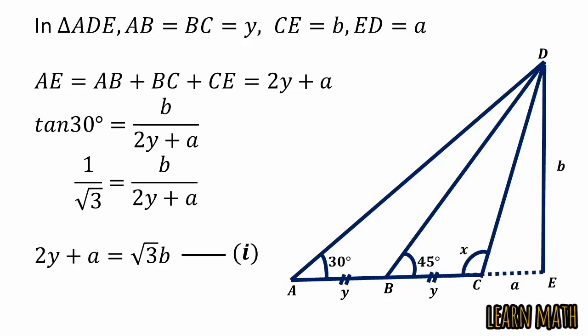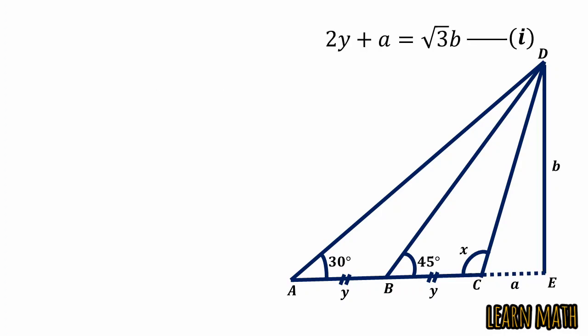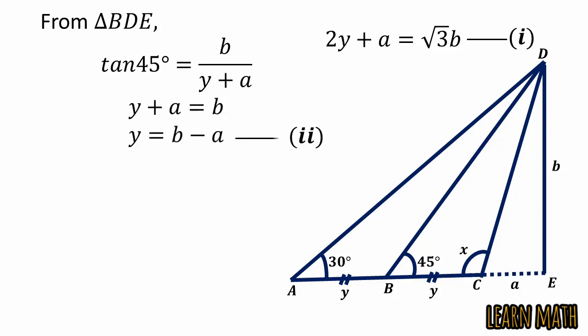Similarly, take triangle BDE and use tangent 45 degrees. Tangent 45 equals b divided by y plus a. Tangent 45 equals 1, so y plus a equals b, giving us y equals b minus a. Let this be equation 2. Now put equation 2 into equation 1.